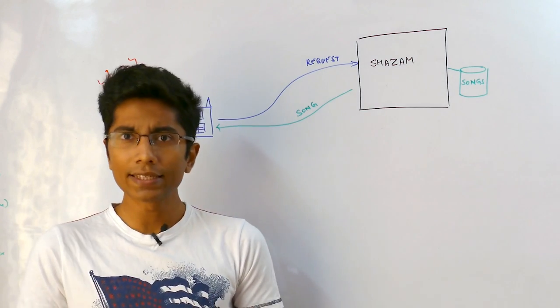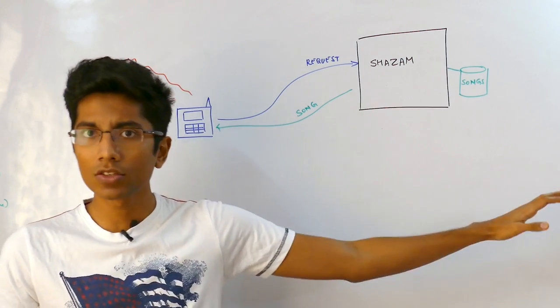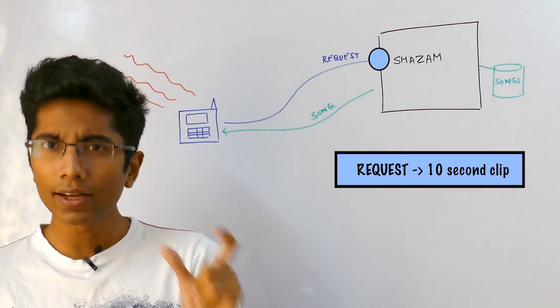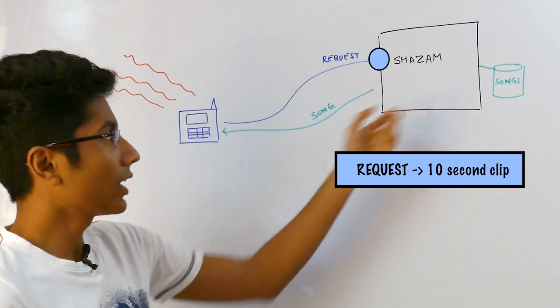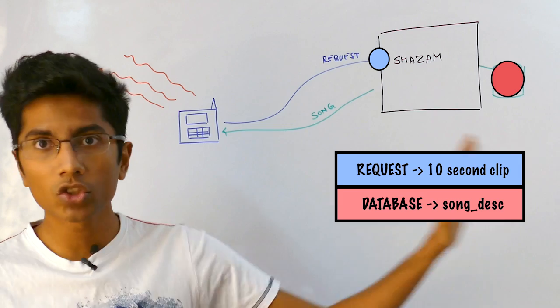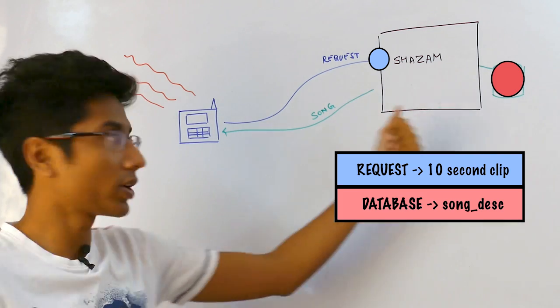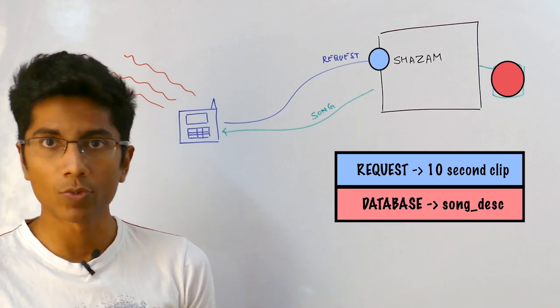Now the important thing here isn't really the architecture that is behind this. The important thing is the algorithm. What you have initially in the request is a 10 second clipping of a song and in your database you need to choose a way to store original songs such that you can match it with the incoming request and give an appropriate response.